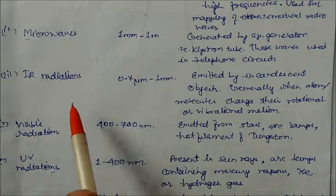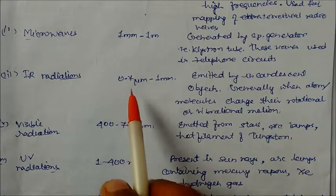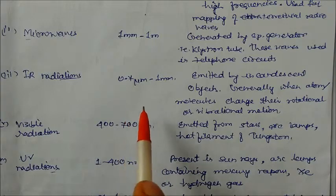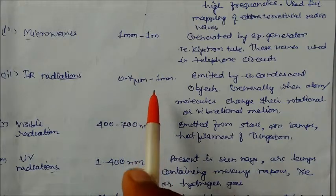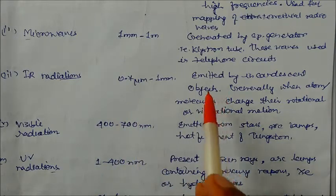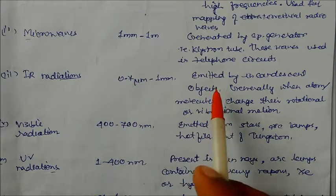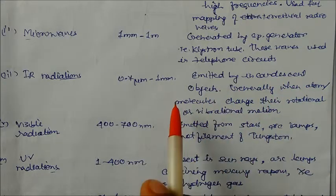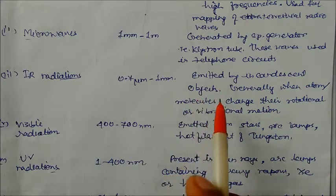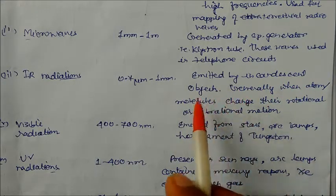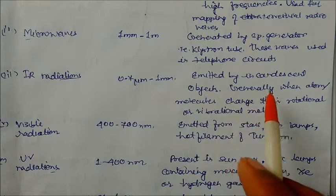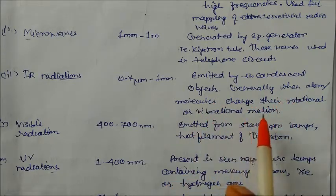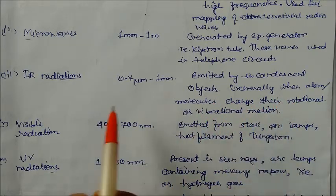Infrared radiation has a wavelength range of 0.7 micrometers to one millimeter. The wavelength becomes very small but frequency becomes very high. It is emitted by incandescent objects like a bulb — from the filament — or by atoms and molecules when they change their rotational or vibrational motion.